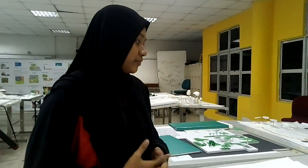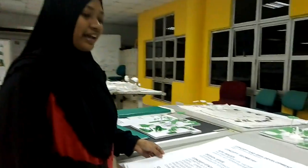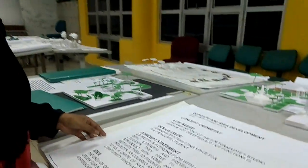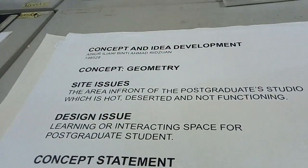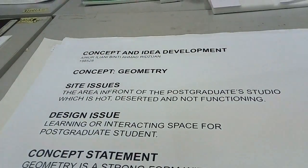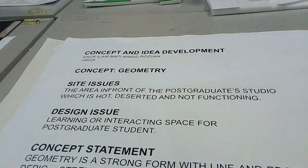So I'm going to explain briefly about our project. We were assigned to design a space for MLA students for their outdoor learning. And this is my concept and idea development. I chose a concept of geometry and using overlapping geometry as my concept form.